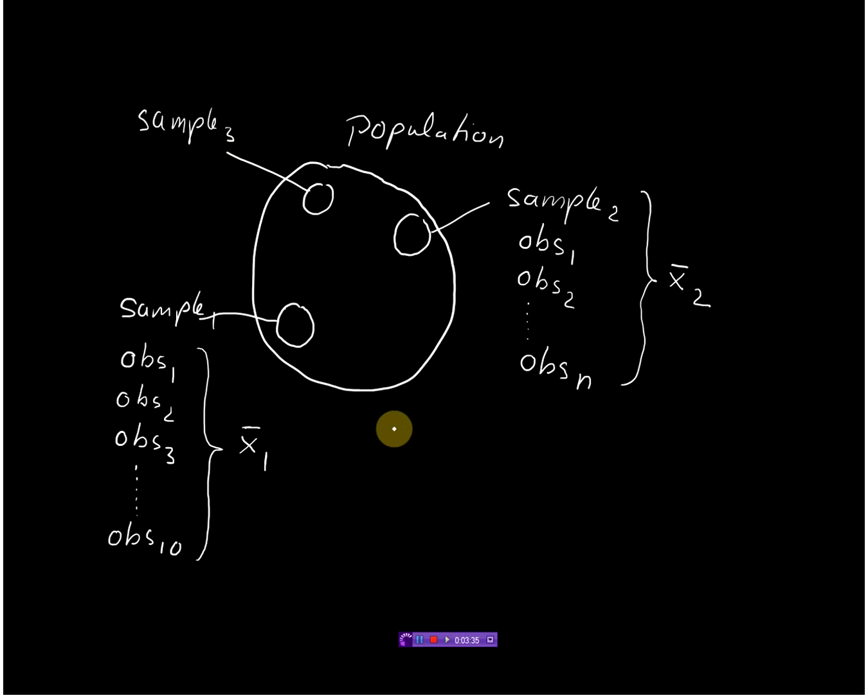And one thing that we probably will immediately see is that if I take this sample here and I get a certain average, this average is probably quite close to the population average. For the population average we usually write this Greek letter mu. And hopefully our second sample average would be close to this population mean or average.